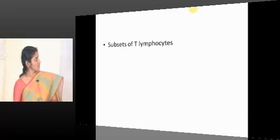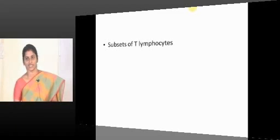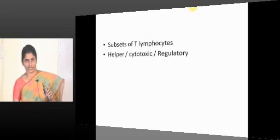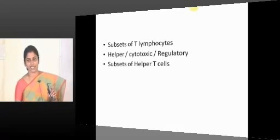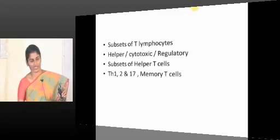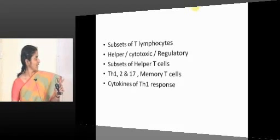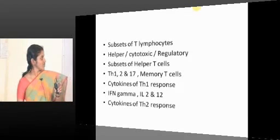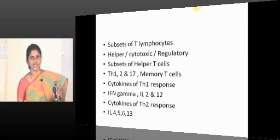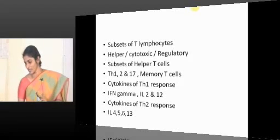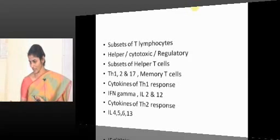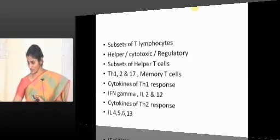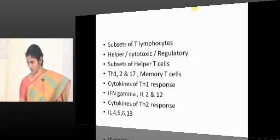That is a short recap. Subsets of T lymphocytes: helper T cells, regulatory T cells. Subsets of helper T cells: Th1, Th2, Th17, memory. Cytokines of Th1 response: interferon gamma, IL-2, IL-12. Cytokines of Th2 response: IL-4, IL-5, IL-6, IL-13. Online students, I'm sorry — due to a short time lag, though I ask you questions, by the time you post the answer I will be moving to the next question, but keep posting the answers.